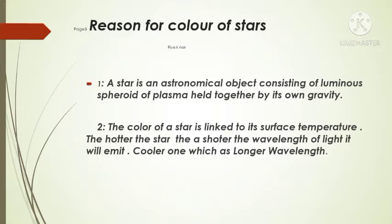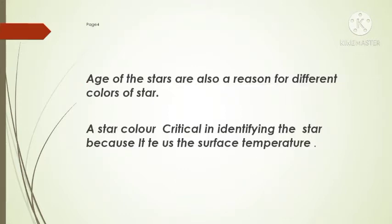The color of a star is linked to its surface temperature. The hotter the star, the shorter the wavelength of light it will emit. The hottest ones are blue or blue-white which are shorter wavelength of light. Cooler ones are red or red-brown which are longer wavelength. Another important factor that determines color of stars is its age. Young stars of blue color emit more light than older, redder stars.